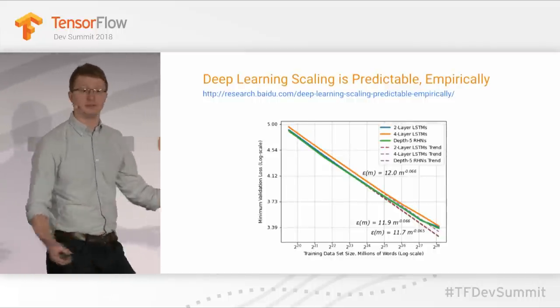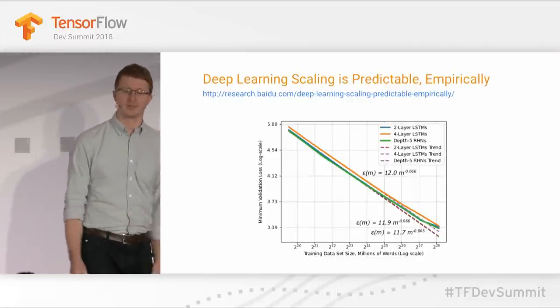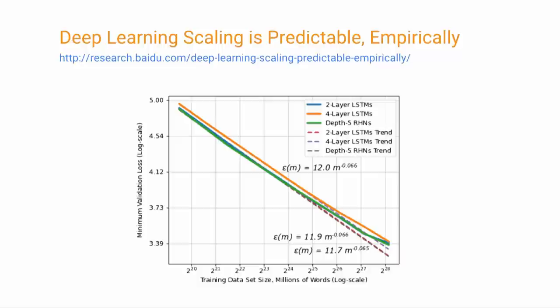Let's dig into a little bit of motivation. Why do we need to improve performance? Some folks at Baidu put together some research showing that if you want to improve the quality of your models, just train on larger data sets. These beautiful straight lines show that for multiple different models, as you give more and more training data, you get linearly more accurate.